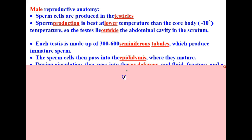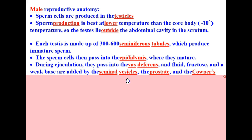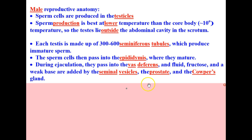The sperm cells then pass into the epididymis, where they mature. During ejaculation, they pass into the vas deferens, where fluid, fructose, and a weak base are then added by the seminal vesicles, the prostate, and the Cowper's gland.